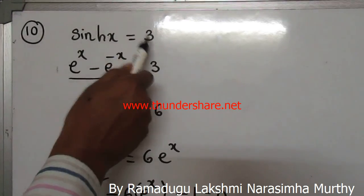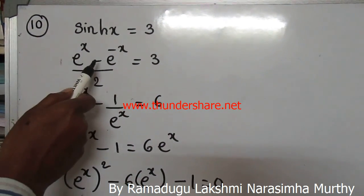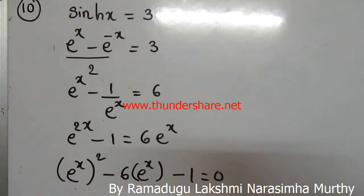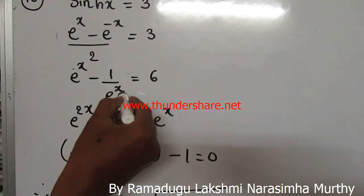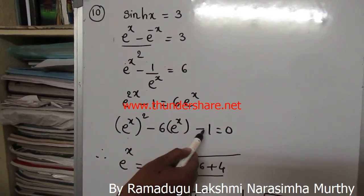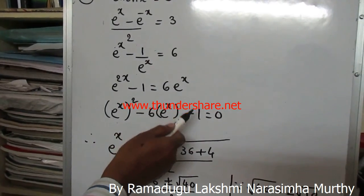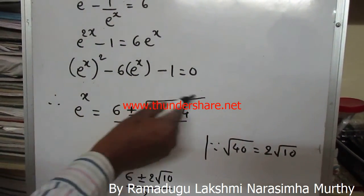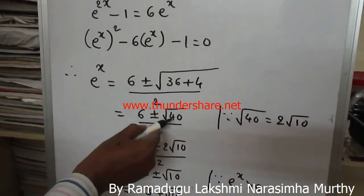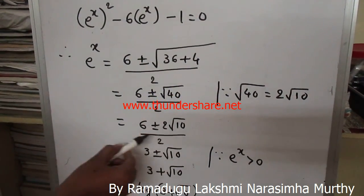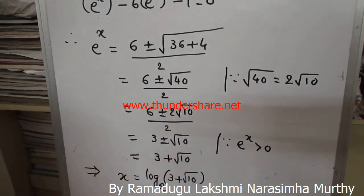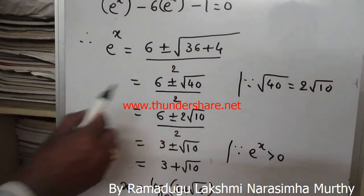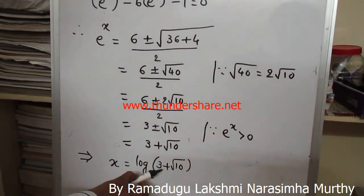Given sinh(x) = 3. Since sinh(x) = (e^x - e^(-x))/2 = 3, we get e^x - 1/e^x = 6, so e^(2x) - 6e^x - 1 = 0. Using the quadratic formula with e^x as the variable: e^x = (6 ± √(36+4))/2 = (6 ± 2√10)/2 = 3 ± √10. Since e^x cannot be negative, e^x = 3 + √10. Converting to logarithmic form: x = log_e(3 + √10).